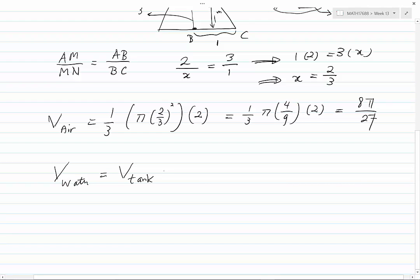The volume of water is the volume of the tank minus the volume of air trapped at the top part of the tank. That is π minus 8π over 27, which becomes 19π over 27 cubic meters.